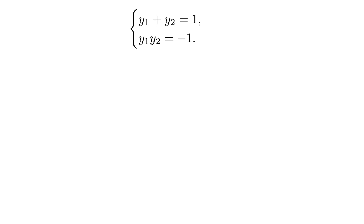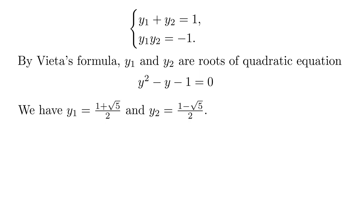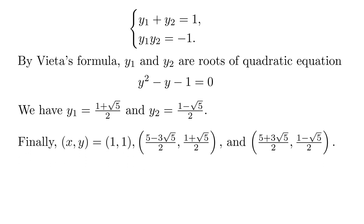We already know y₁·y₂ = −1. By Vieta's formulas, y₁ and y₂ are roots of y² − y − 1 = 0. Therefore y₁ and y₂ equal (1 ± √5)/2. Finally, we have three pairs of solutions for the original system of equations.